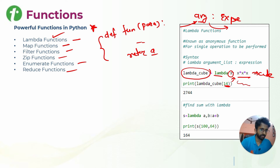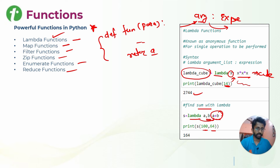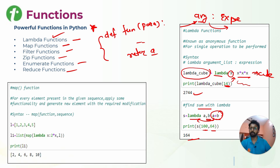14 into 14 into 14, which is 2744, will be printed as output. Similarly, we can find a sum with a lambda using lambda a, b: a+b. For example, providing two inputs, both will be given to the lambda function and the output will be returned to s and printed.